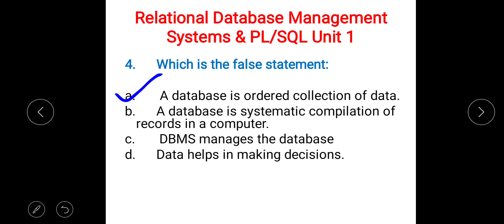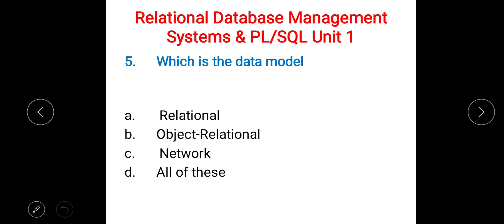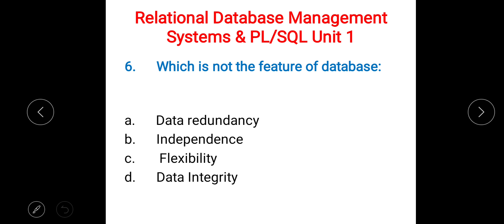Next: which is the data model? Options are A) relational, B) object-relational, C) network, D) all of these. The right answer is D) all of these — the data model includes relational, object-relational, and network.